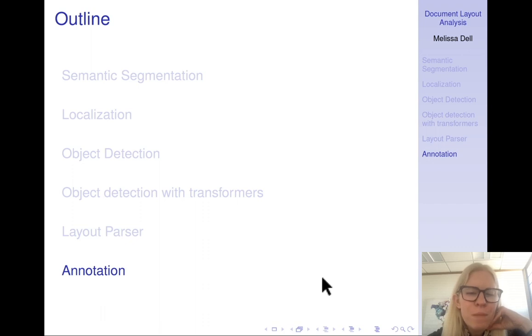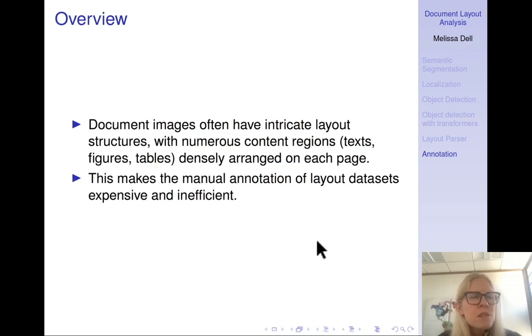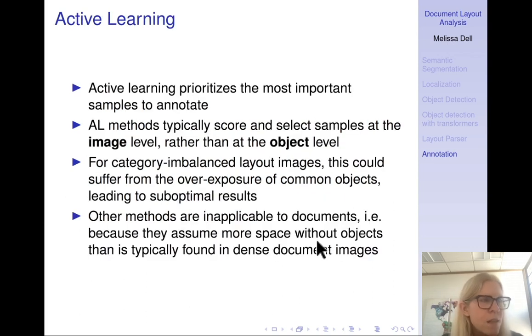That's Layout Parser. We can talk more about it in class. So now I want to say a word about annotation. As you guys know, oftentimes the most challenging part of deep learning is doing the annotation, and doing it in a way that's efficient so that you're able to get the most out of your label data and able to make the labeling requirements reasonable. Document images often have intricate layout structures with numerous content regions. So they might have text, figures, tables that are densely arranged on each page. And this makes manual annotation of layout datasets really expensive and inefficient.